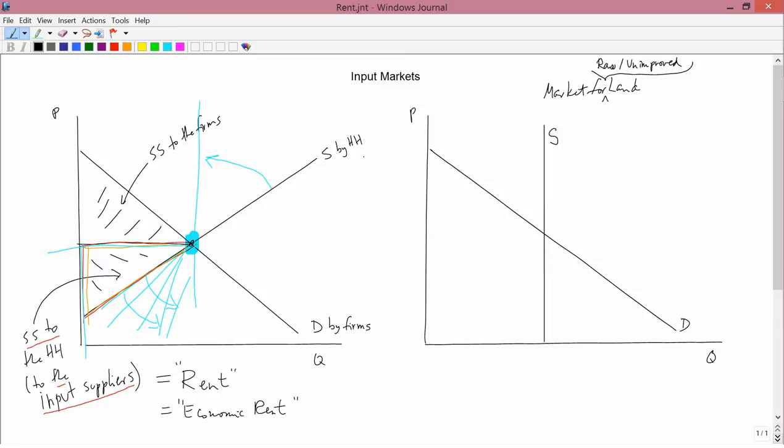So my claim is that once the supply curve is completely vertical, what's happened is that this whole area is the area of rent. All of it is rent. All of it is social surplus.